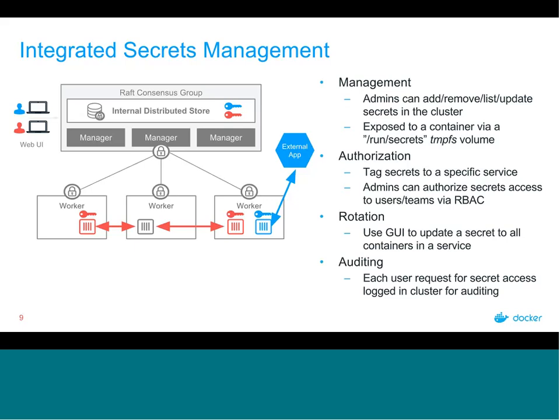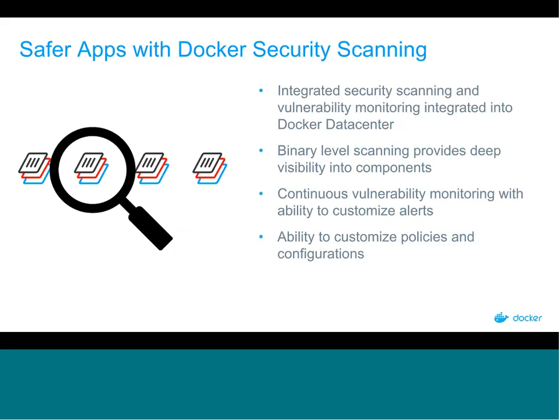The secrets management feature provides a convenient, easy, and secure way to ensure an application receives the confidential information it needs to run. But how do you ensure the application code itself is safe before you run it? This is where Docker Security Scanning comes in. It's an integrated scanning tool and vulnerability monitoring built directly into Docker Trusted Registry — binary-level scanning that provides deep visibility into image components, breaking each image down into its layers, running machine-readable code against known CVE databases.